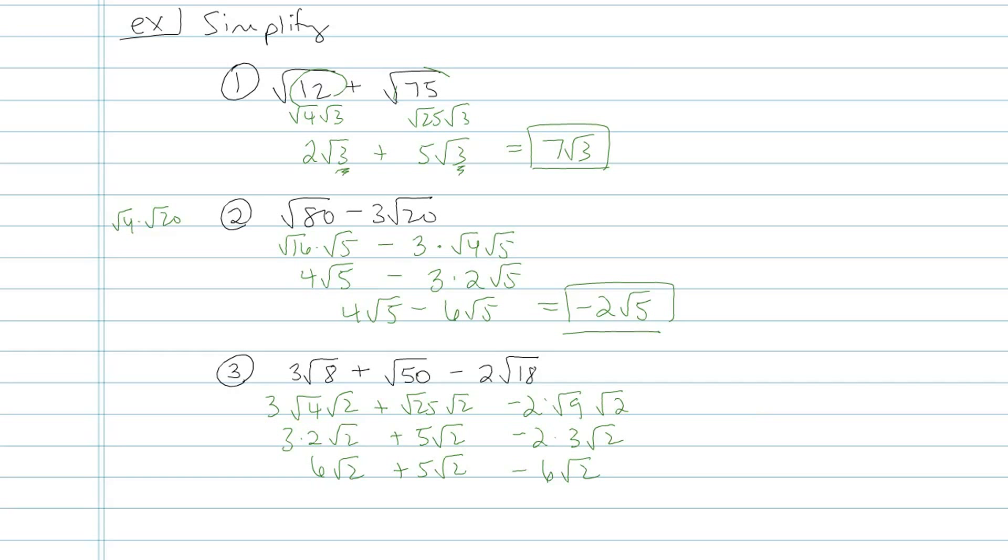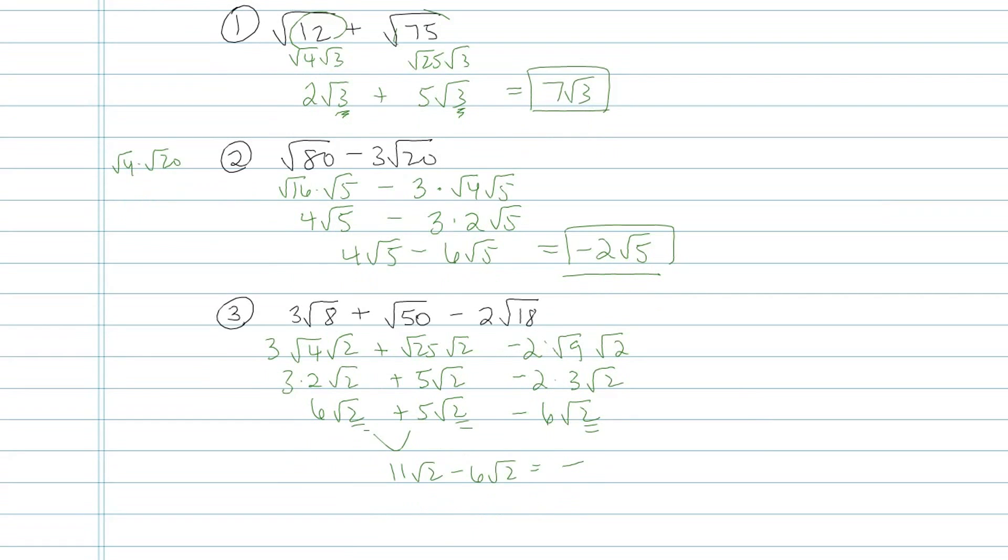Now look, all three of these guys happen to be the same radicands. They happen to be all root 2's. So moving from left to right, I would have 11 root 2 minus 6 root 2, which is 5 root 2.